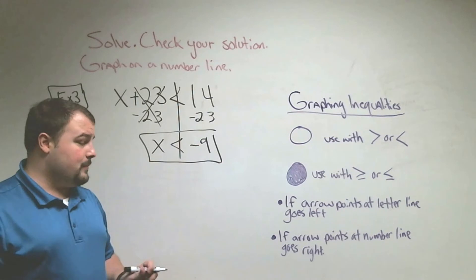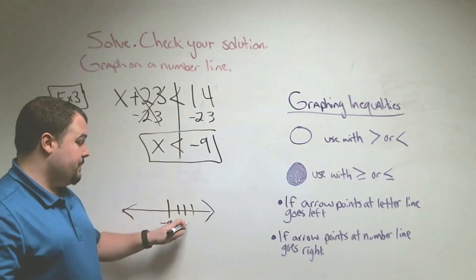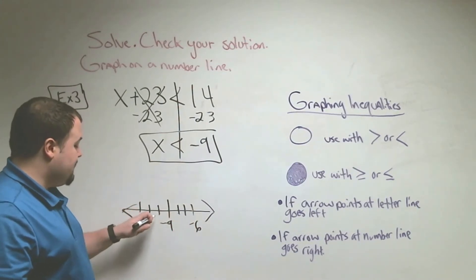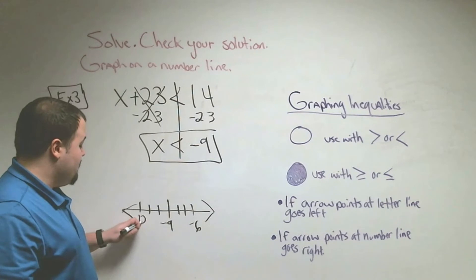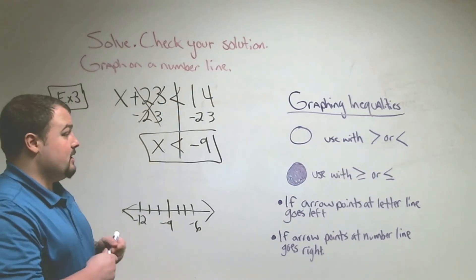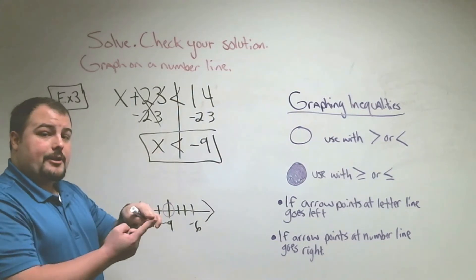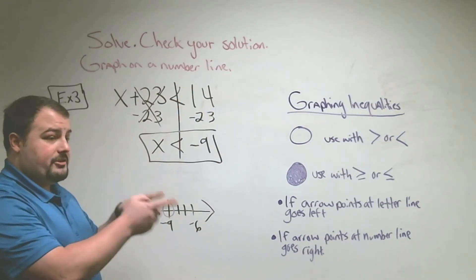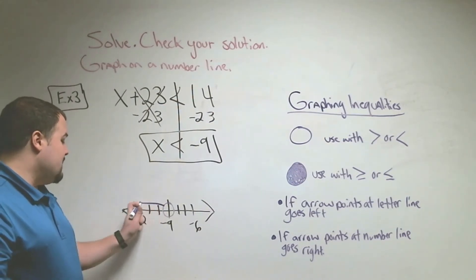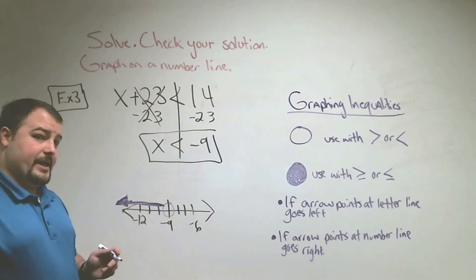To graph this on a number line, put negative 9 in the middle, count 3 up: negative 8, negative 7, negative 6. Count 3 back: negative 10, negative 11, negative 12. Look at the symbol — it's an open circle, so put an open circle on negative 9. The arrow points at the letter, so anything to the left is where our answer lies. Our answer is everything to the left of negative 9.